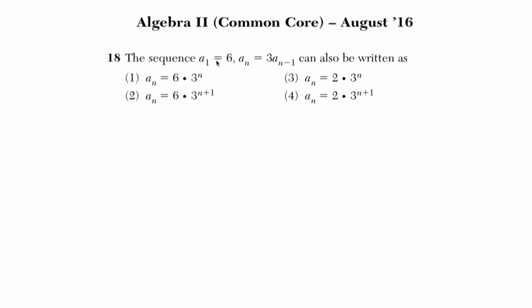Okay, it says the sequence a sub 1 equals 6. That tells me, first of all, before I go any further, I'm thinking a sub 1, that tells me it's the first term in the sequence, is 6. That's what a sub 1 is. Then they're saying a sub n is what? It's always 3 times a sub n minus 1. Now, a sub n minus 1 is simply 1 before, minus 1 before the nth term.